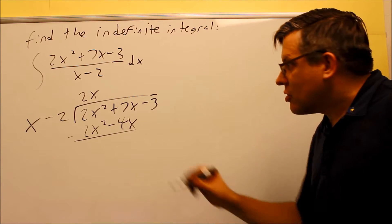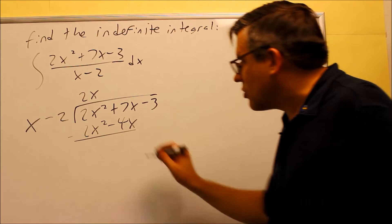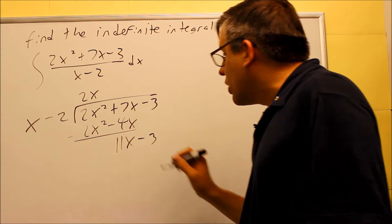This is where most people make the mistake is doing the subtraction, so be really careful when you're subtracting this. You're going to do 7x minus negative 4x. So subtracting that's going to give you a positive 11x. You bring down the next term.